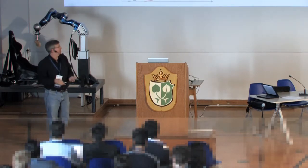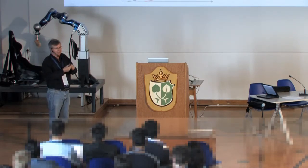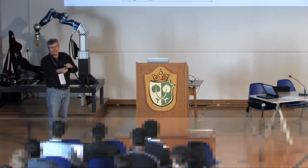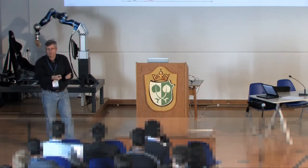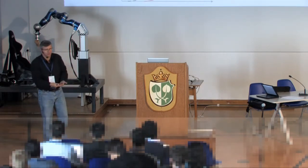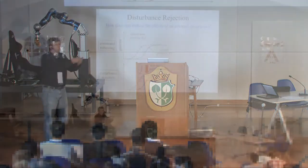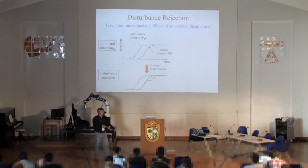I also have the possibility of modulating impedance by changing the gains of the reflex loops. If the stretch reflex says stretching activates the muscle by 10, that gives one stiffness; if instead it activates the muscle by 20 for the same stretch, now I have a stiffer system. So the human neuromuscular system can modulate impedance, and also shift the equilibrium position and perform feed-forward control.